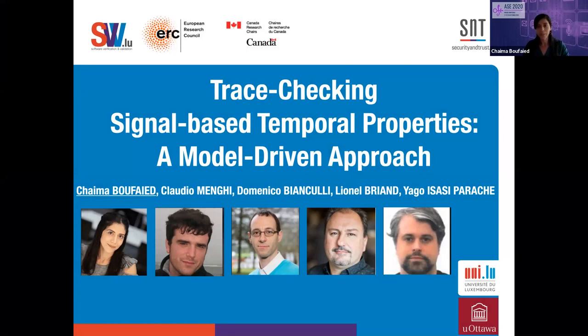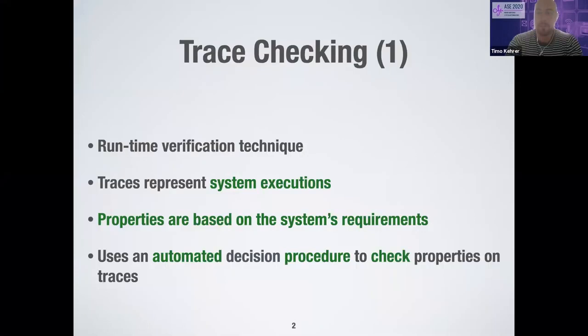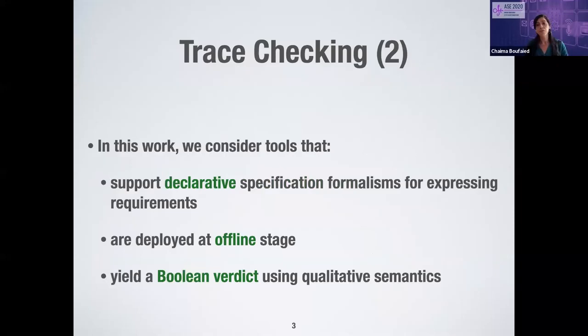Trace checking is a runtime verification technique where traces represent system executions and properties are based on system requirements. Trace checking uses an automated decision procedure that checks properties on traces. In this work, we consider tools that support declarative specification formalisms for expressing requirements, deployed at the offline stage, and that yield a Boolean verdict using qualitative semantics.